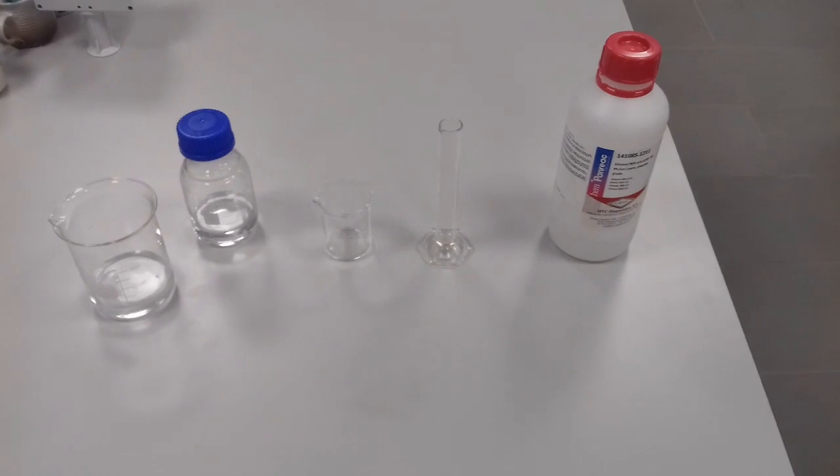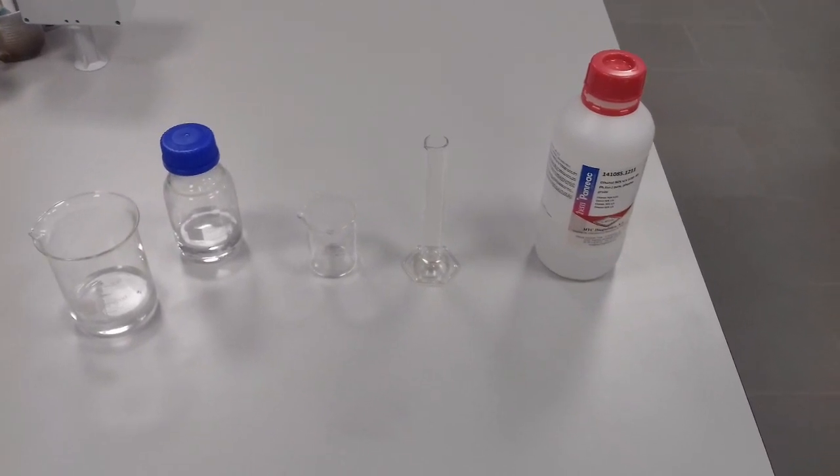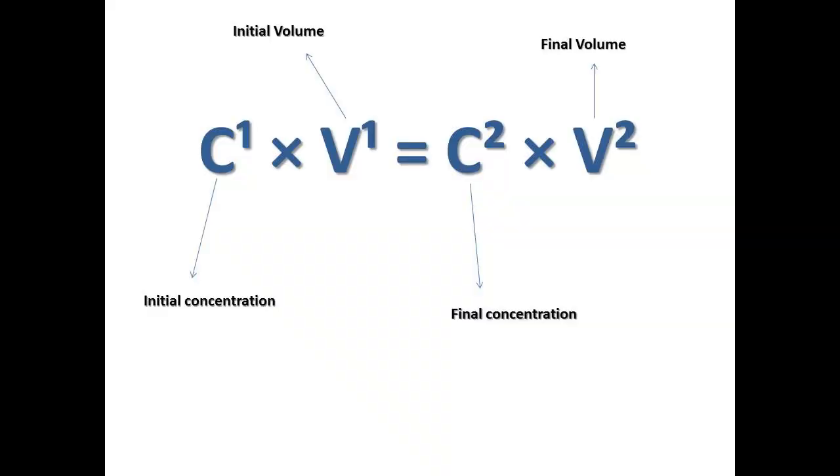How we are going to prepare this solution. We need to use a simple formula. This formula is for dilutions. Here we can see the formula which we are speaking about. In this formula, initial concentration multiplied by initial volume equals final volume multiplied by final concentration. It's a simple formula which is used in everyday practice in laboratories.